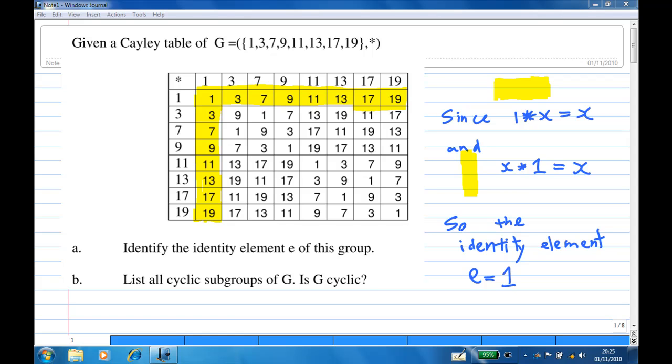We are given a Cayley table of G, where G consists of 1, 3, 7, 9, 11, 13, 17, 19, and a binary operation star.